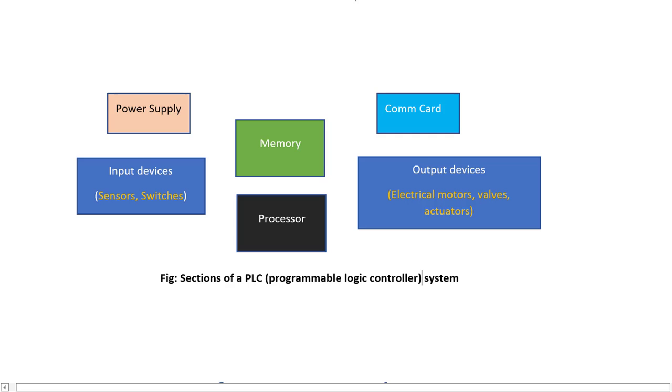A PLC system works in a similar manner except the fact that the input devices are sensors and switches, while the output devices that are being controlled by the PLC are electrical motors, valves, and actuators.